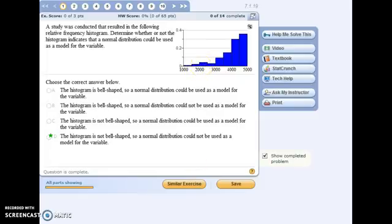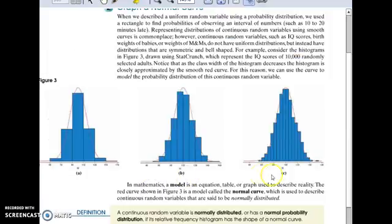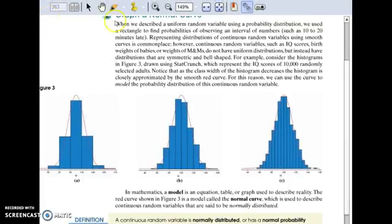To look at some examples of what a bell-shaped histogram would look like, look in the textbook, this is page 363. A bell-shaped histogram will have the peak in the middle where the mean is, and it will be symmetric on both sides from that.